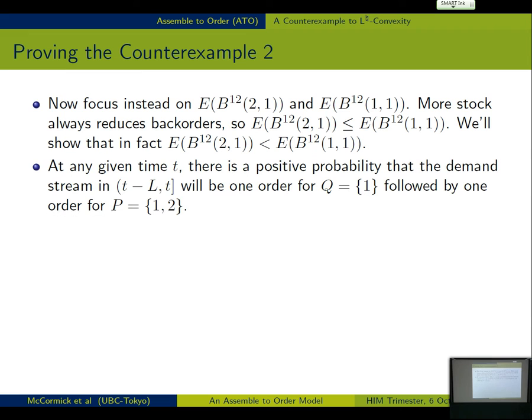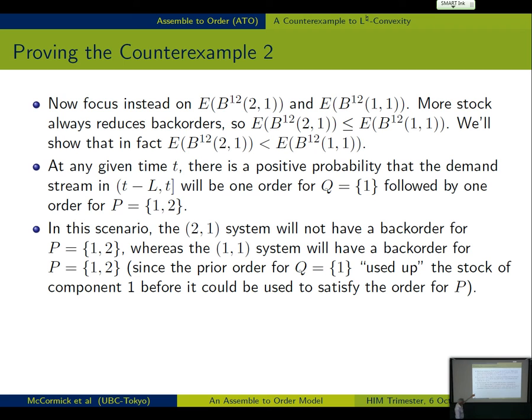That's pretty easy. So, at any given time, there's a positive probability that the demand stream in the lead time interval is going to be one order for the product Q that includes this component one, followed by one order for the (1,2) product. If that's true, that means that the (2,1) system is not going to have a back order for that product, whereas the (1,1) system will have a back order for the product. Right? Because in the (1,1) system, the prior order for Q used up the stock of component one before we could use it to satisfy the demand for the (1,2) product. So, that proves that there's a positive probability event where the (2,1) guy is smaller than the (1,1) guy, that says the expected value is strictly smaller. And that's it.